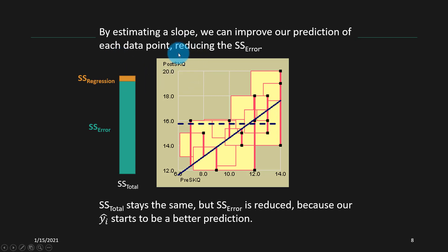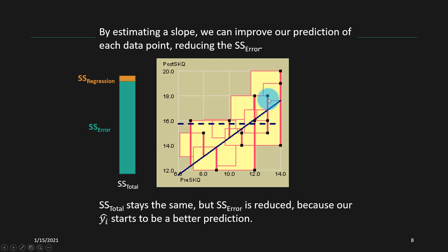We can see this a little more clearly by going back to the relationship where we're looking at post-test scores as a function of pre-test scores. The dashed line represents the mean we were using originally to get our calculation of the sum of squared errors total. The solid blue line represents a regression line drawn through the data. We calculate a residual as the difference between each real data point — represented by the black dots — and the y-hats or model predictions, which fall along the blue line. The difference between each score and our model prediction is represented by the pink line, which is the residual term, and we can square those residuals to get the sum of squared error of the residuals.